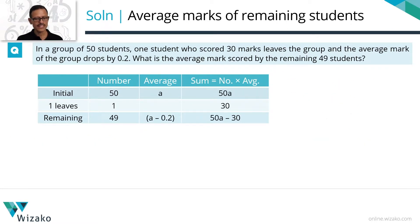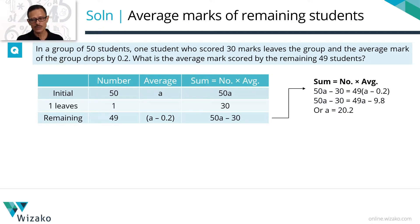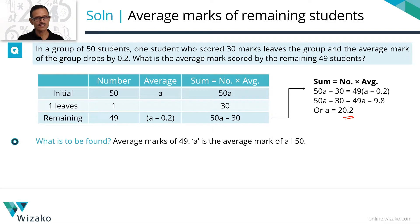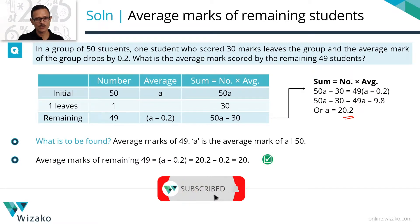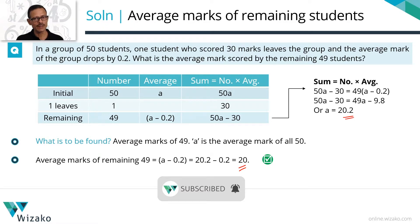Quick summary: assign a variable A for the average. Sum is 50A. Thirty marks goes away, so the new sum is 50A minus 30. New average is A minus 0.2. Sum equals number times average gives us A. A is the average of all 50, but we need the average for 49. Average for 49 is A minus 0.2, so the average marks of 49 students equals 20 marks.